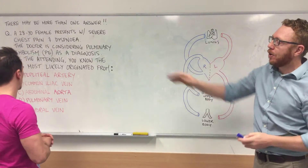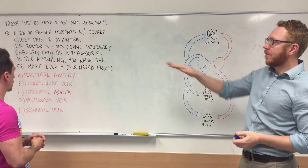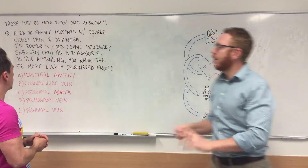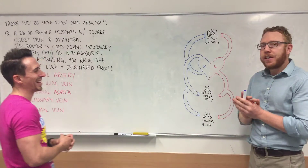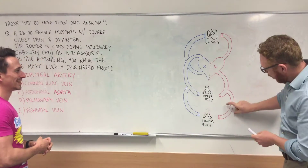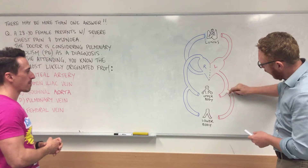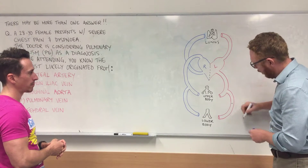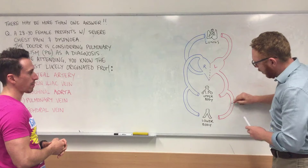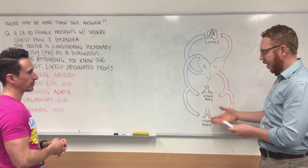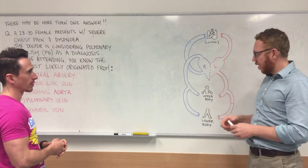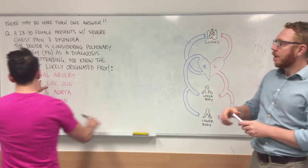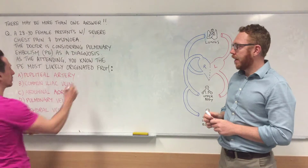Let's look at what the options are. Starting with answer A, the popliteal artery — this is down in your legs, carrying blood to your lower legs. So if a clot formed there, it would only get stuck in your legs and cause ischemic damage to your legs, not to your lungs. So that's not the answer.